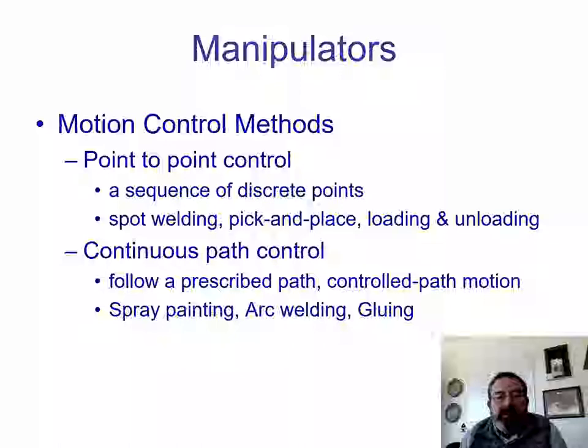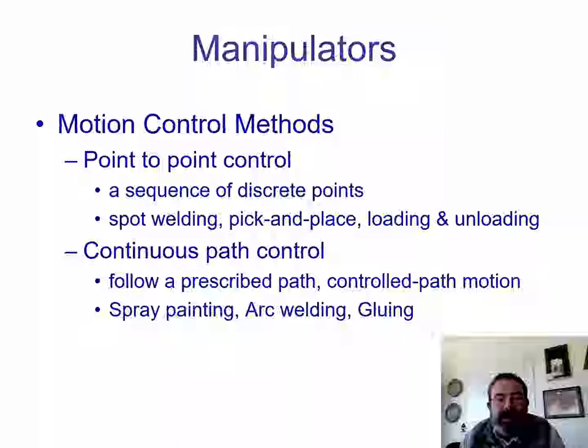On the contrary, we have continuous path control. In this kind of motion control, we need to follow a prescribed path, so the motion is controlled along the path. We need to do trajectory planning first, and then a tracking algorithm in order for the end effector to go as we want. Applications are spray painting, arc welding, and gluing.